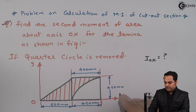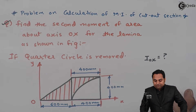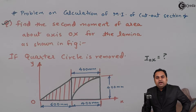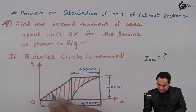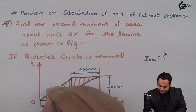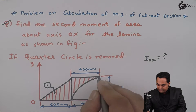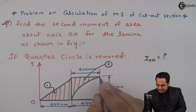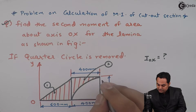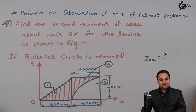We have to calculate the MI for this cutout section. Before starting, we divide the given plane figure into a number of figures. The first figure is the triangle, the second figure is a square of 400 by 400, and the third figure is the quarter circle. Now we will calculate the MI.